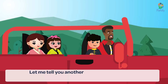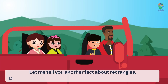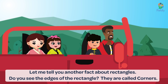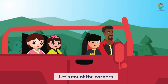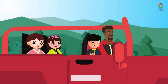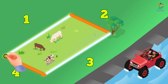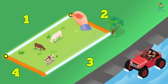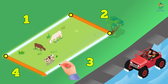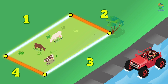Let me tell you another fact about rectangles. Do you see the edges of the rectangle? They are called corners. Let's count the corners. One, two, three, and four. A rectangle has four corners!